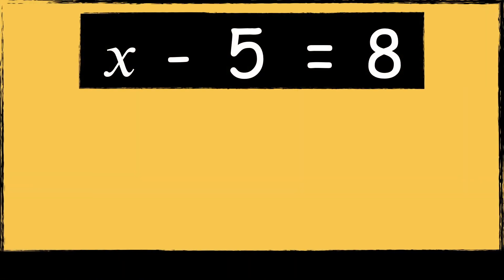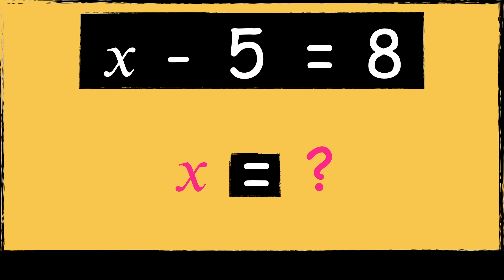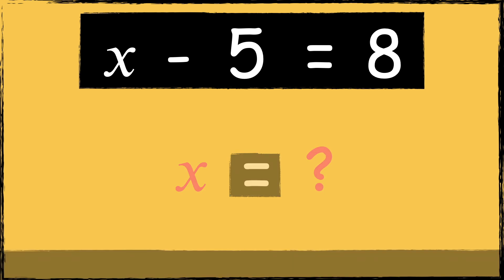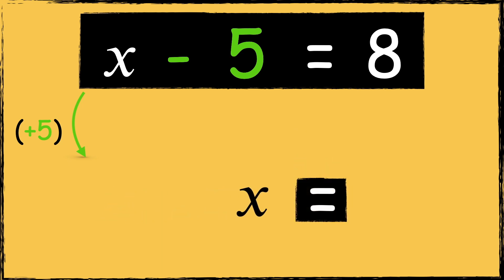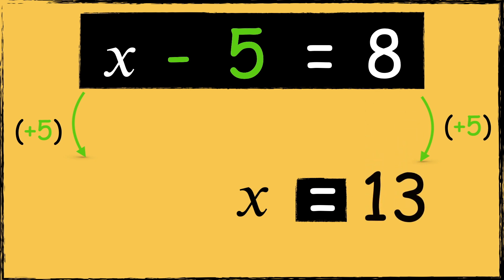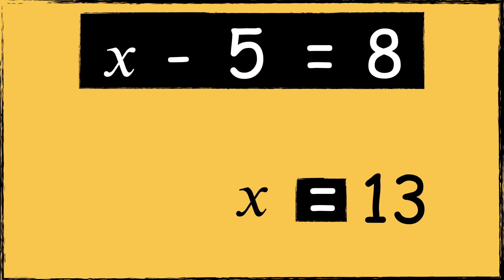Here's the next equation: X minus 5 equals 8. To solve this equation we need to find the value of X. First I can remove the constant term by adding 5, so now I'm left with X. Anything that we do to the left side we must also do to the right side, so we need to add 5 to 8. 8 add 5 is 13, so the solution to this equation is X equals 13.